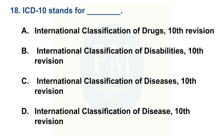ICD-10 stands for: Option A: International Classification of Drugs, 10th Revision. Option B: International Classification of Disabilities, 10th Revision. Option C: International Classification of Diseases, 10th Revision. Option D: International Classification of Disease, 10th Revision. The correct option is Option C: International Classification of Diseases, 10th Revision.